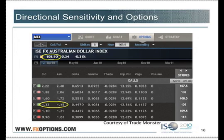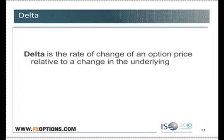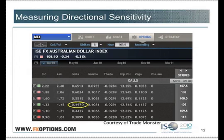Here's how we answer this question: we need to look at the option's delta. Delta is the rate of change of an option price relative to a change in the underlying currency. So if we look at the 109 strike calls — $1.33 bid at $1.45 — we see that the delta is 0.4970.